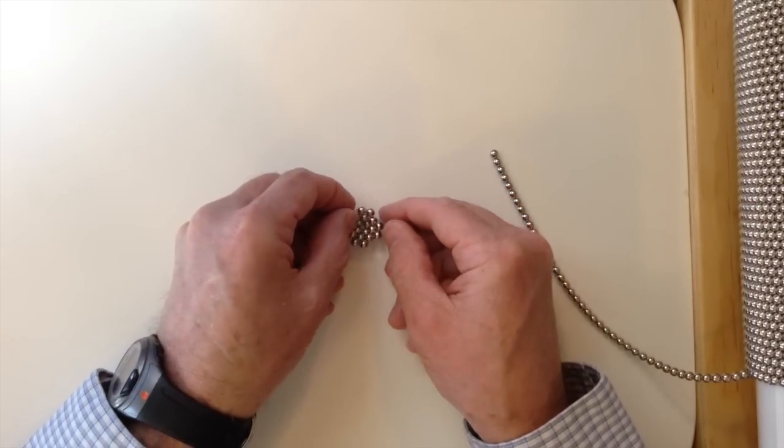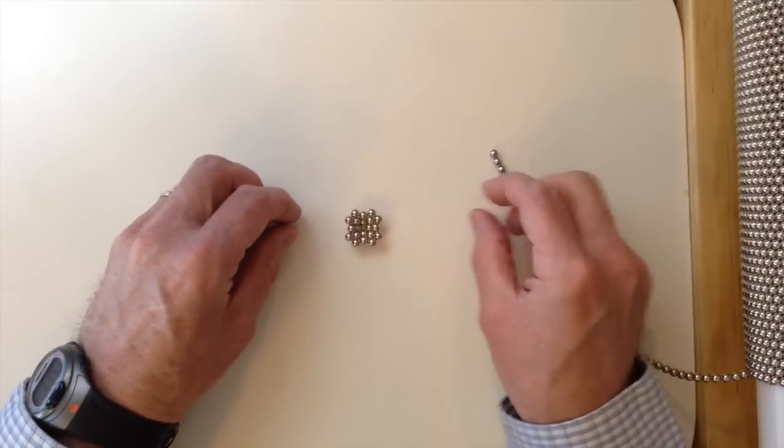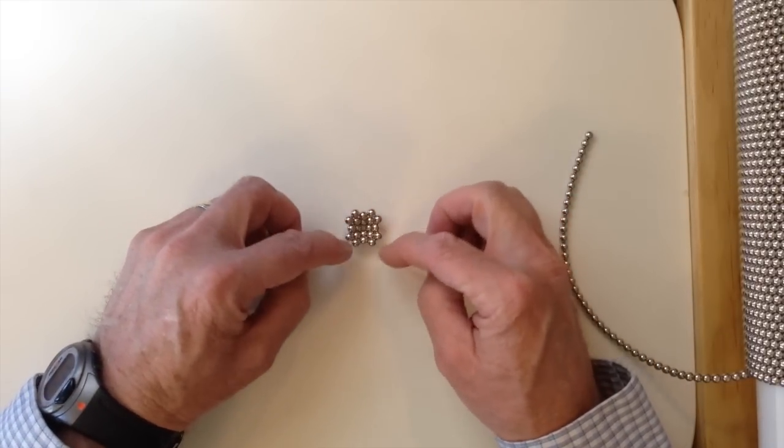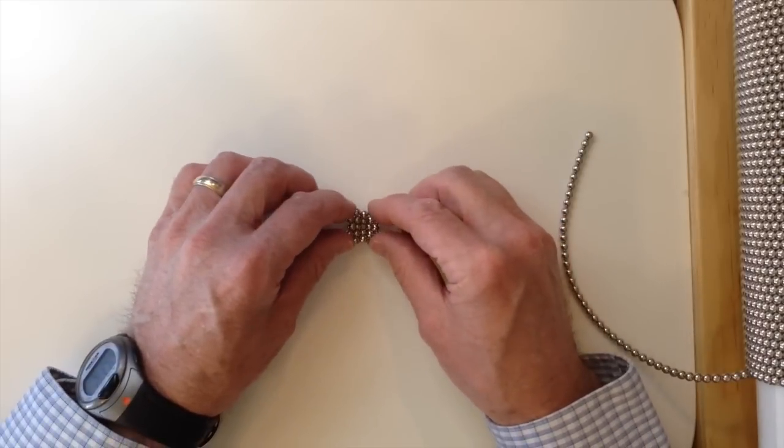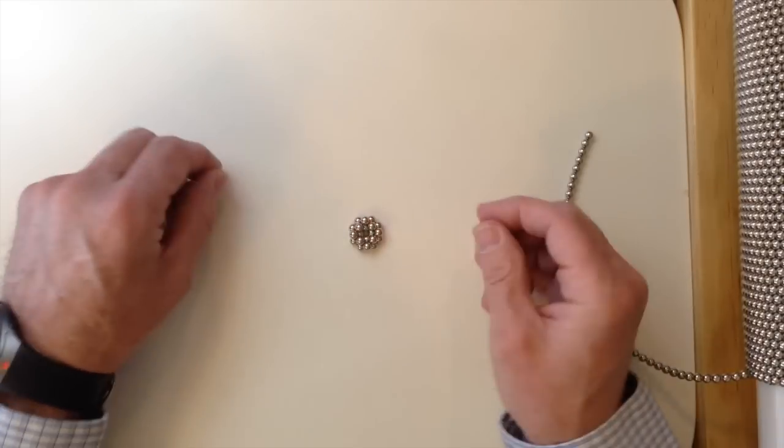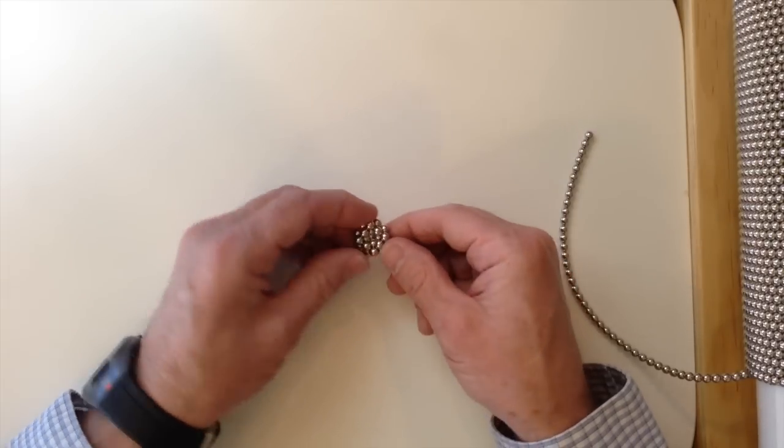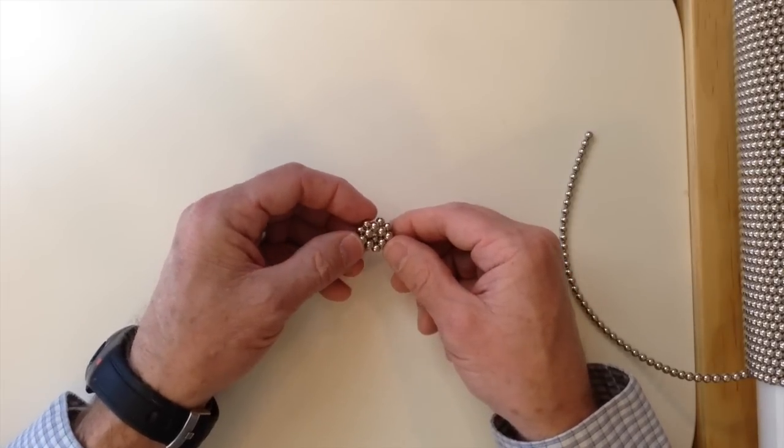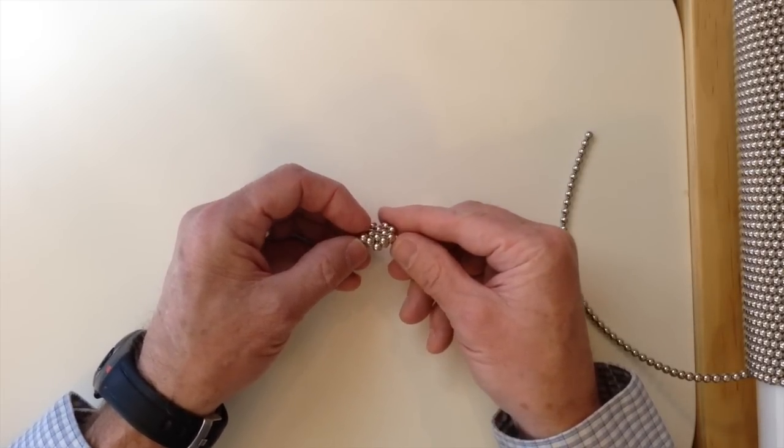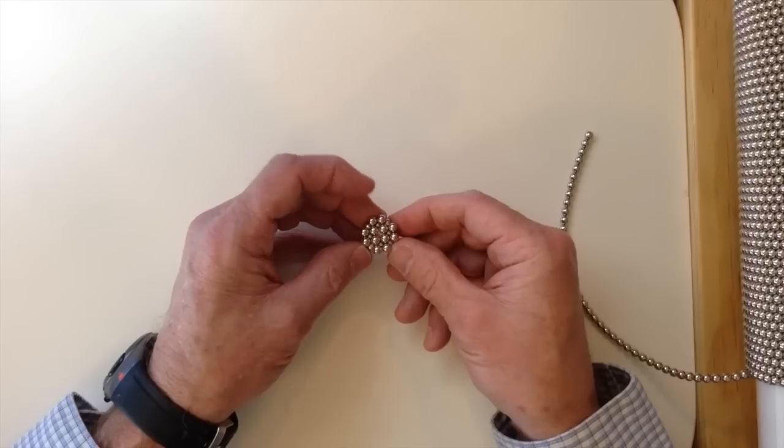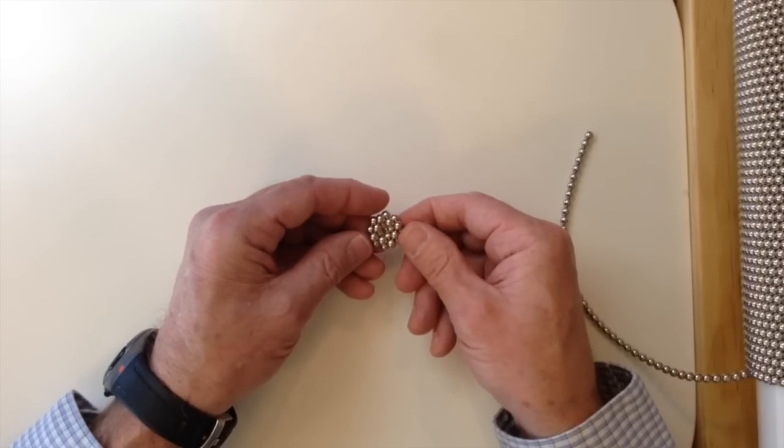Then lay it down on a flat surface and then you're going to push these eight magnets down. Everything else is going to stay the same, just moving those eight outer magnets down. So what you have now is a kind of a square shape. It looks like this on the bottom and this on the top.